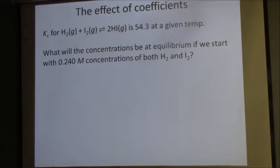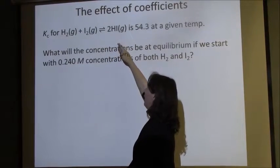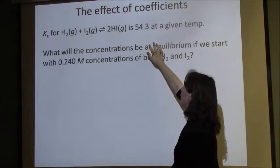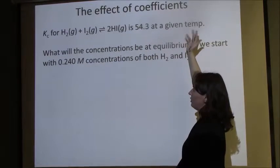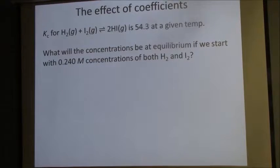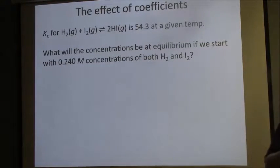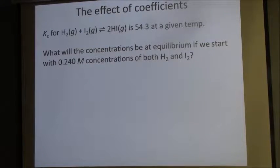Here's an example. The equilibrium constant for this reaction, H2 plus I2 in equilibrium with 2HI, is 54.3 at a given temperature. What are the equilibrium concentrations if we begin with 0.24 molar concentrations of both H2 and I2? We don't know any information about the amount of HI.